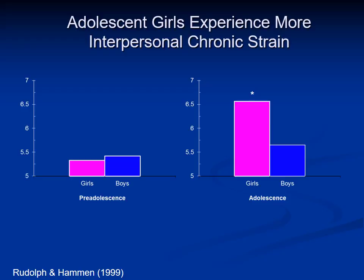We further hypothesized that exposure to higher levels of social stress in adolescent girls would help account for the gender difference in depression that emerges during this time. Exposure to stress may lead to self-blame and low self-worth if the cause of the stress is internalized. It may interfere with the development of effective self-regulation and may lead to a sense of hopelessness about the ability to improve one's relationships. Girls with higher levels of interpersonal stress may also not receive the benefits of healthy relationships, such as emotional support or intimacy, and all of these factors may contribute to higher levels of depression in girls.